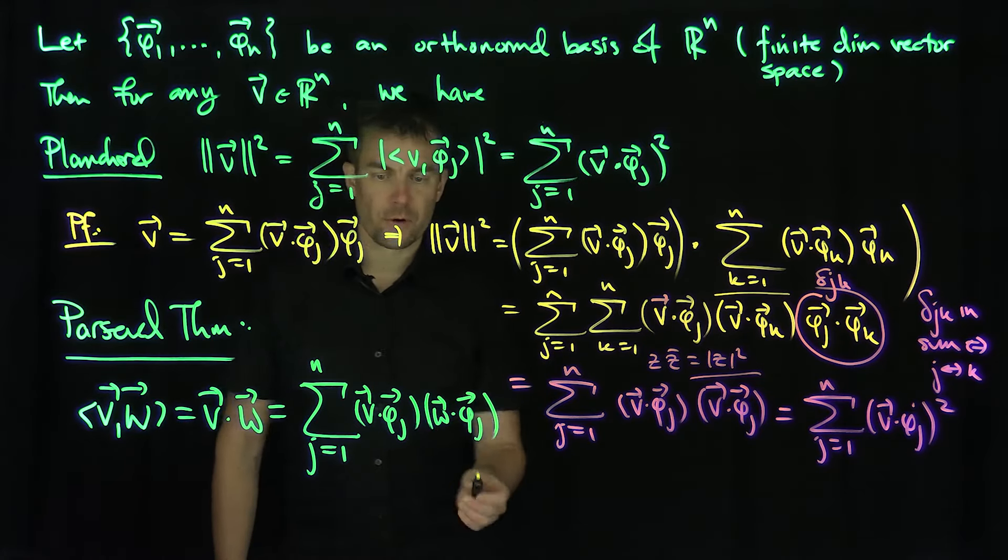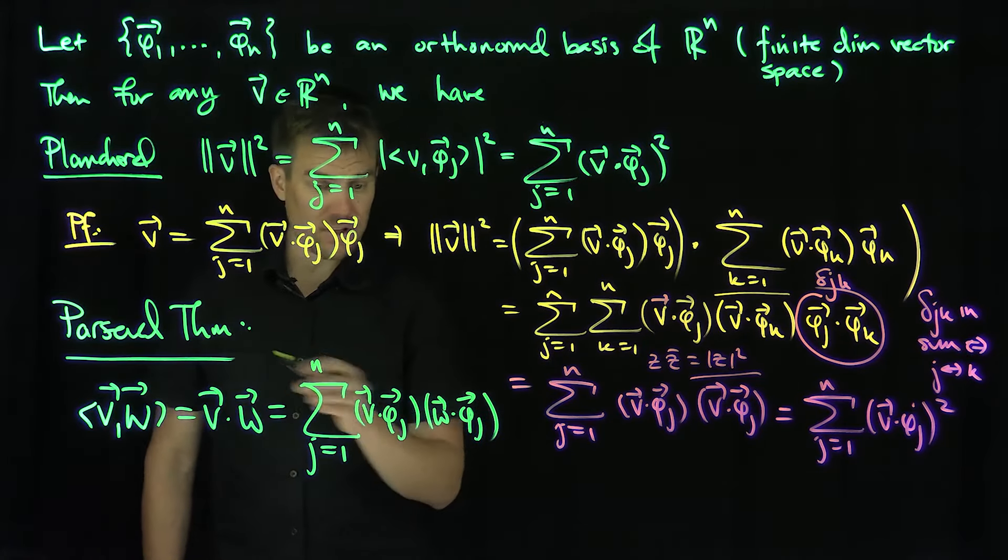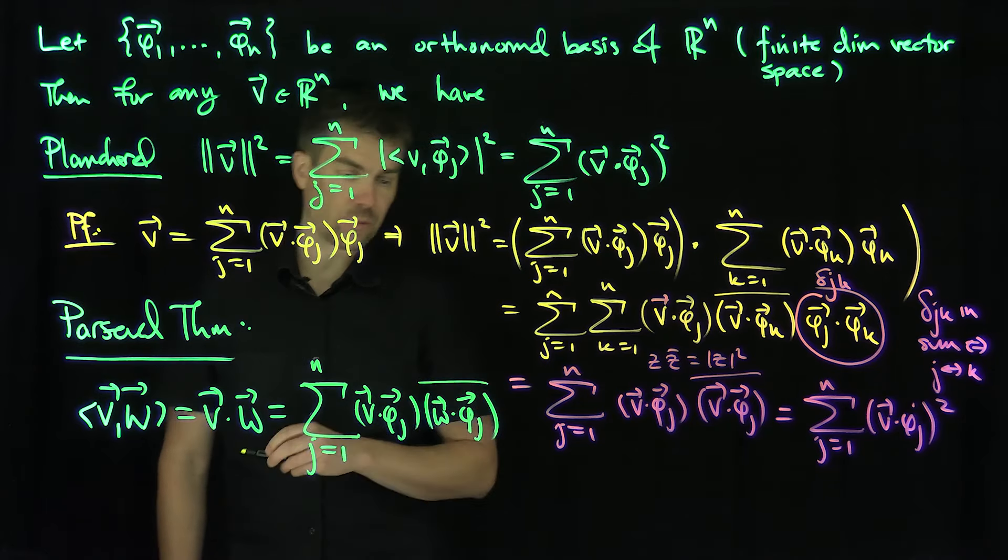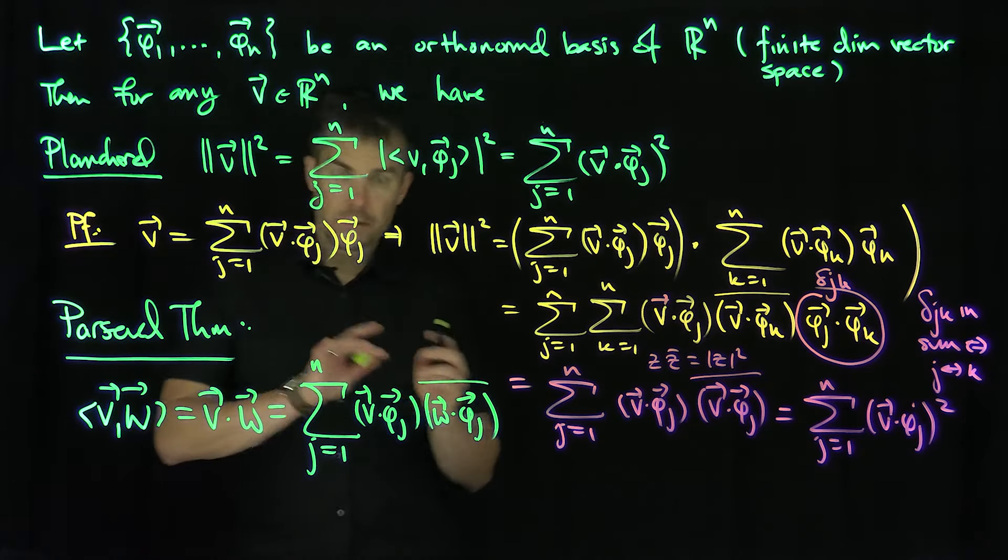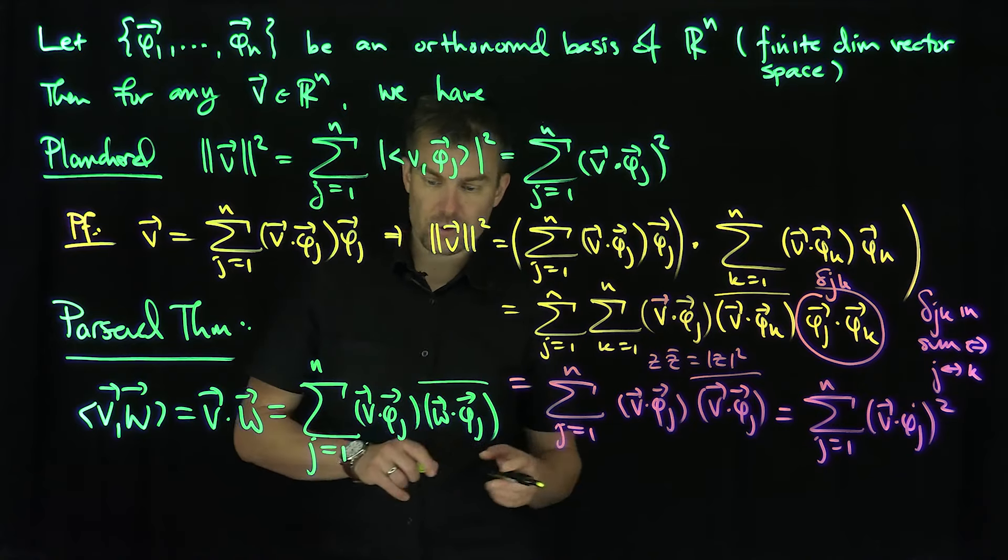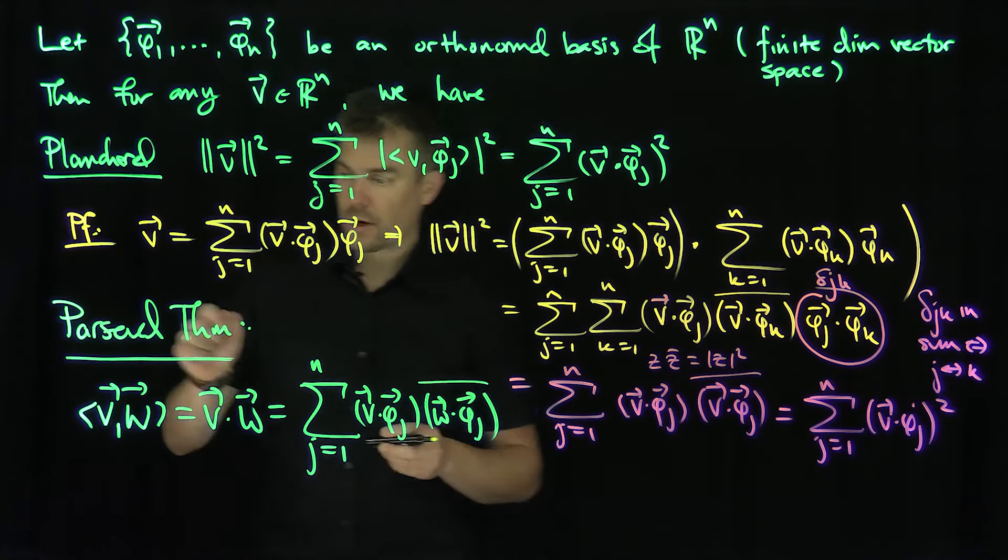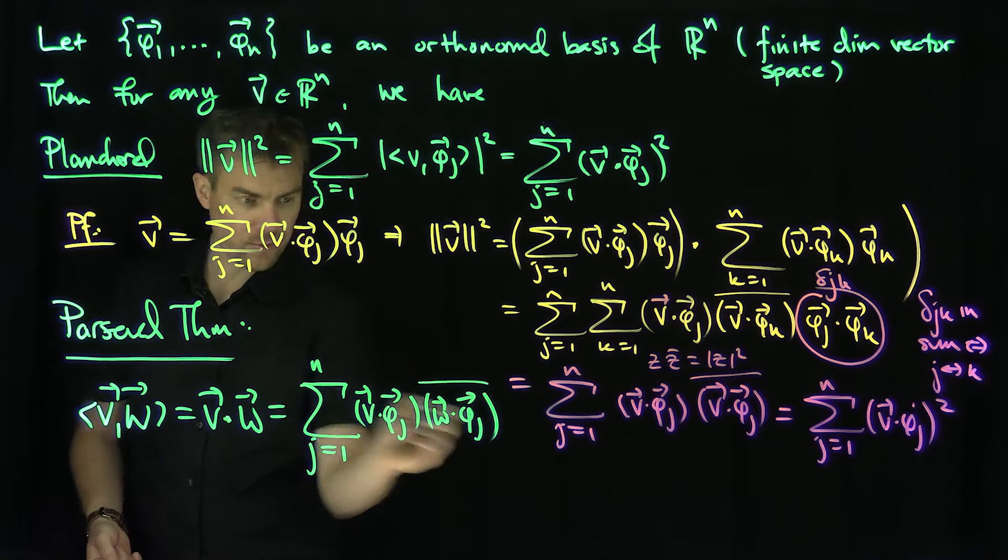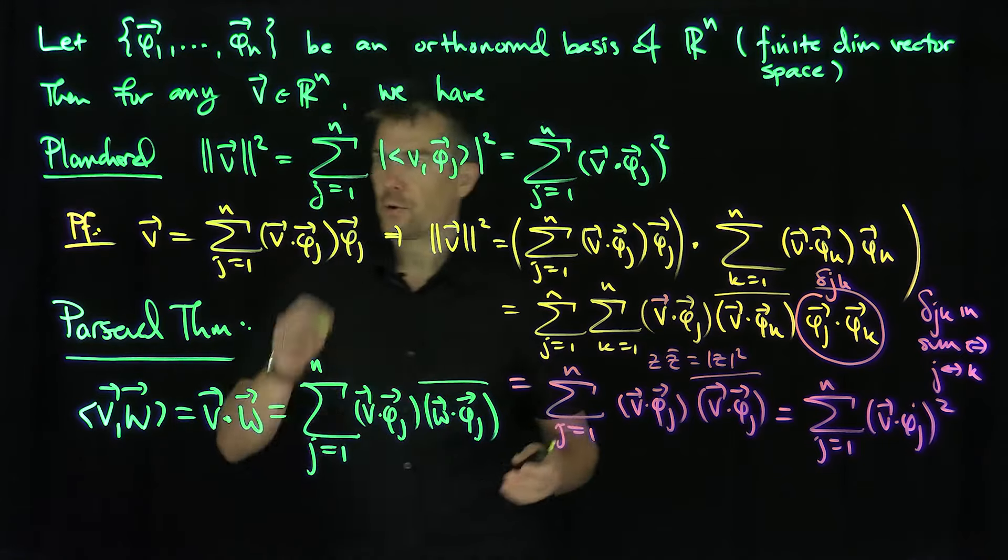So in other words, you're summing over all the inner products of v with the phi_j times w with the phi_j. In the complex space, this would be a bar over here. And so we get exactly these expressions for Parseval and the Plancherel theorem for doing the dot products in terms of the orthonormal basis and doing the norm calculations.